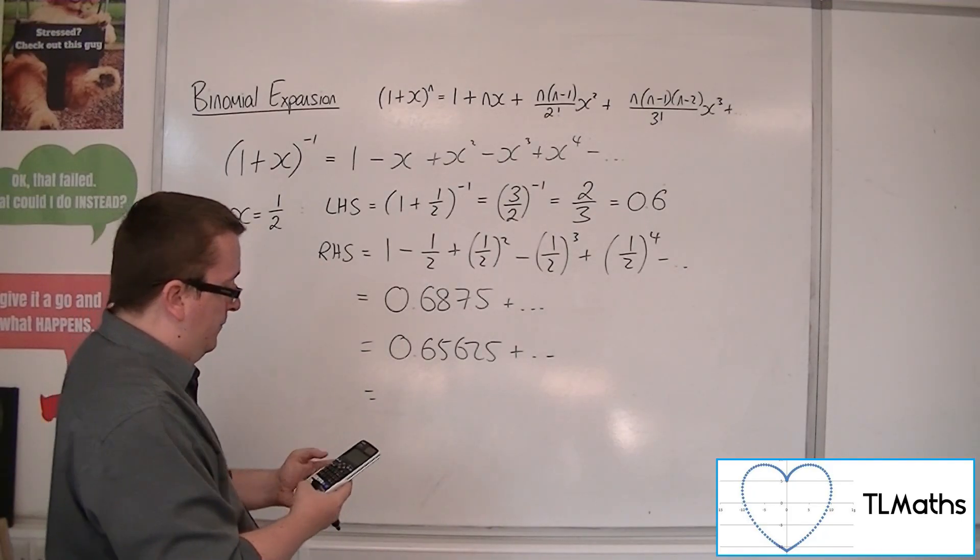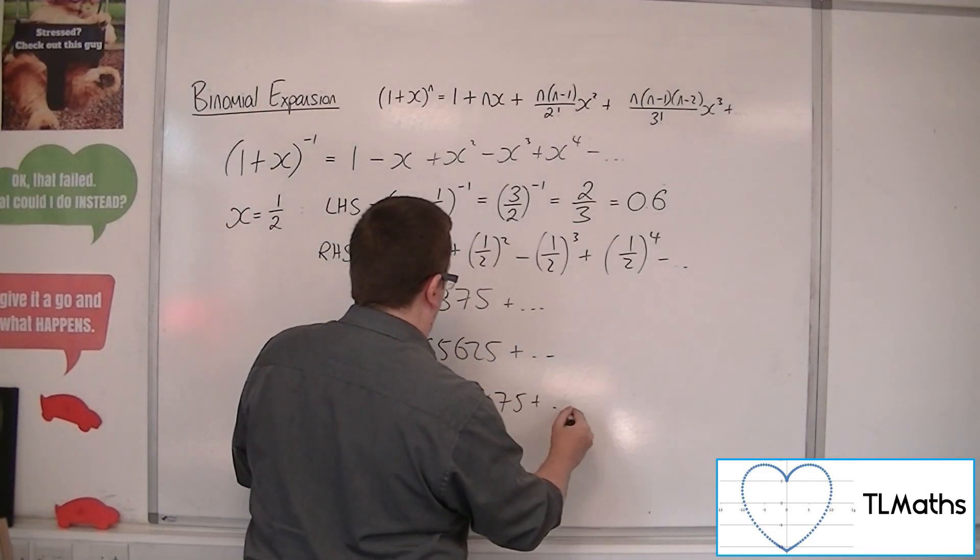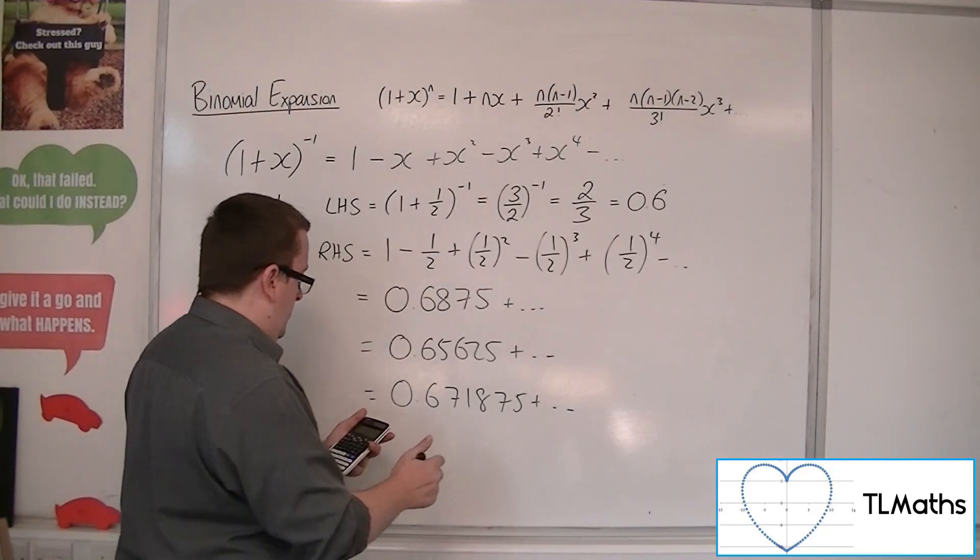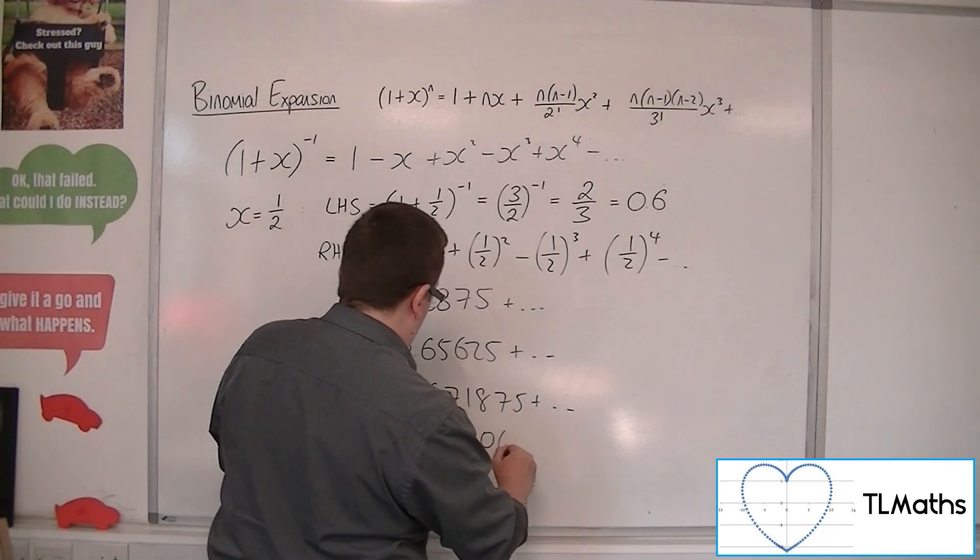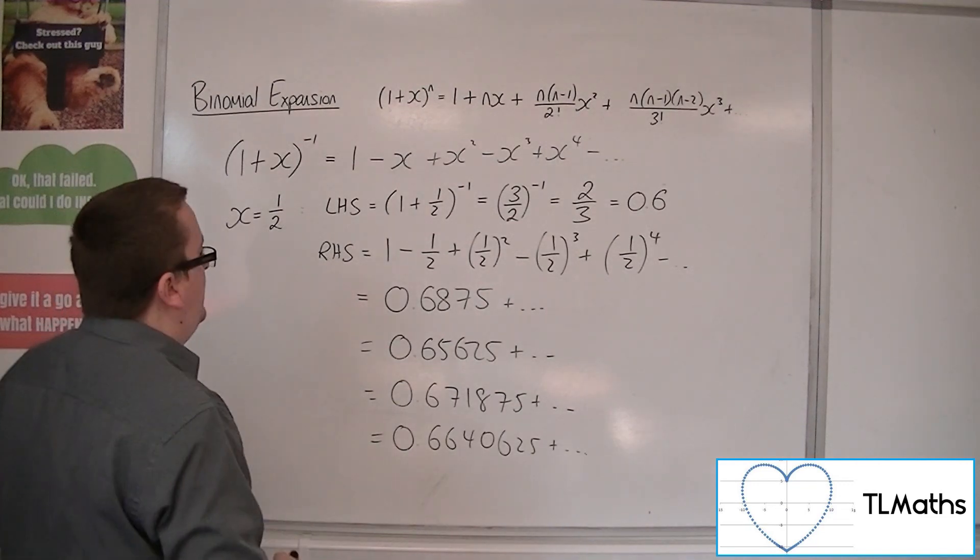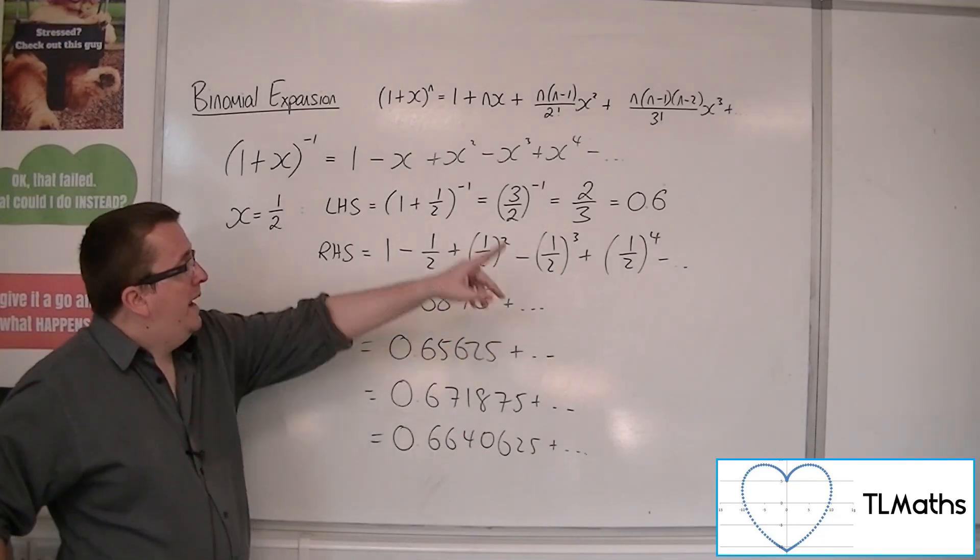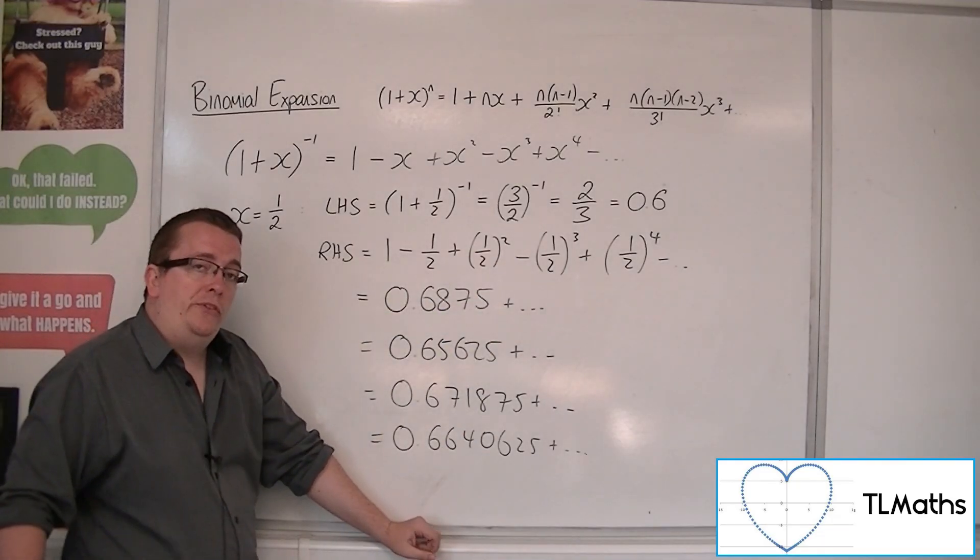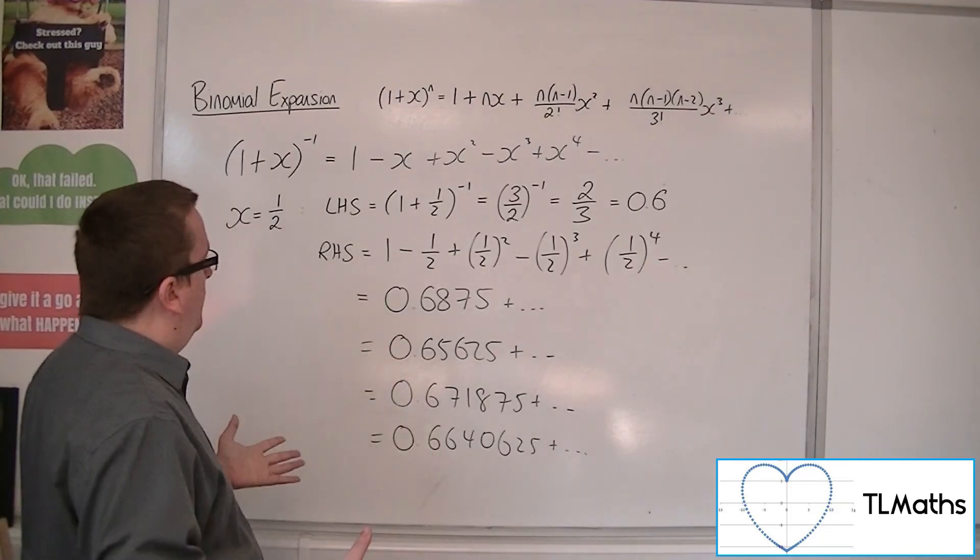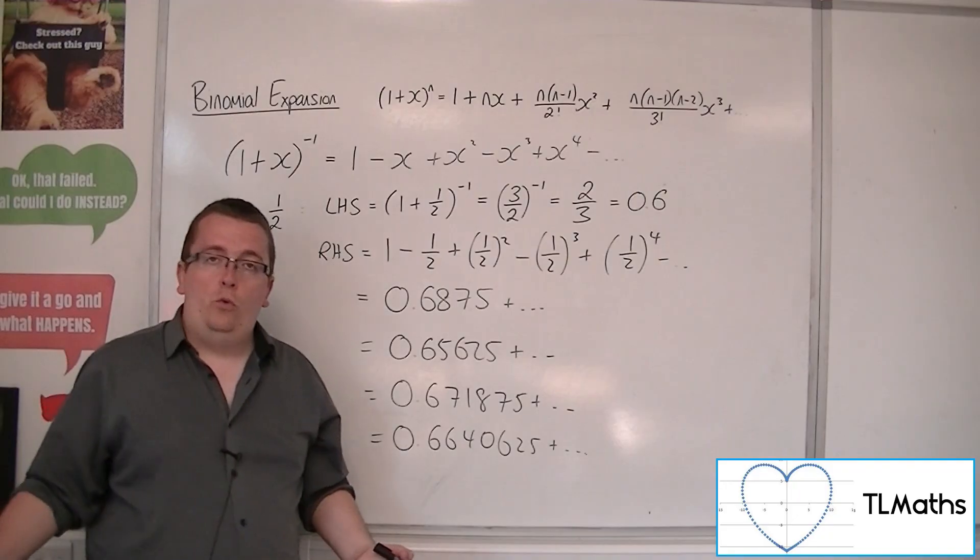Then I'd have to add on a 64th, which gets us to 0.671875. Then I'd have to take away 1 over 128, which is 0.6640625. So, what you can see is that the gaps between these terms are getting smaller, right? And we are homing in on what appears to be 0.6 recurring. So, just from a little bit of trying it out, x equals a half seems to work perfectly fine. So, what's the worry?